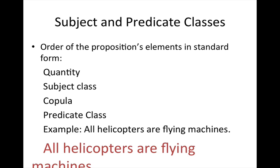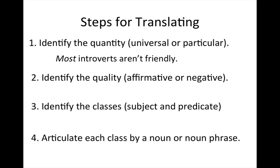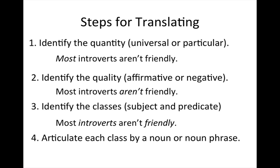Let's go back now to our steps for translating. Remember, we identify the quantity — universal or particular. In this case, we have the sentence 'most introverts aren't friendly.' 'Most' tells us that we're dealing with a particular claim. Now the quality: notice that we have a negative — 'most introverts are not friendly.' Next, let's identify the classes. We have the class of introverts and the class of friendly things.